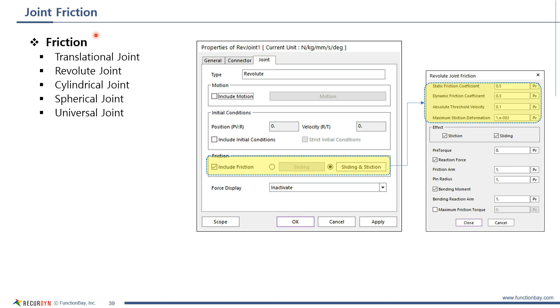You can apply friction to the joint. The following five joints support friction. For translational joint and revolute joint, it is recommended to use sliding and stiction options.